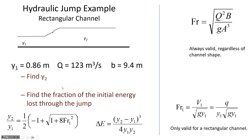For the second part, find ΔE and also find ΔE relative to how much energy there was at station 1 — that gives you the fraction of initial energy which is lost.